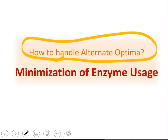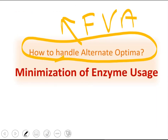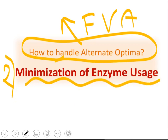There are two major alternatives to handle alternate optima. One is flux variability analysis, to predict the ranges across alternate optima for all fluxes in the system. The second alternative is based on the principle of minimization of enzyme usage by the cell. Now I will talk about this alternative to handle alternate optima.